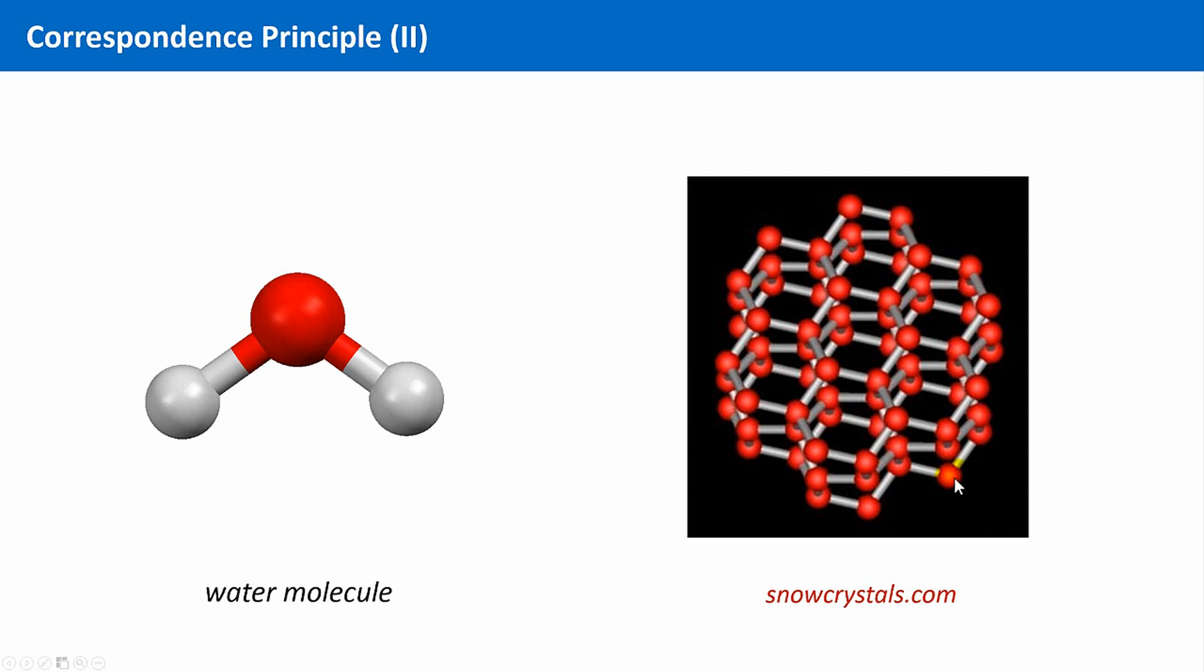The red spheres are oxygen atoms, and the hydrogen atoms are not shown. They lie between the oxygens along these gray rods. And what you recognize is that these water molecules are arranged in a particular ordered way, giving rise to this overall hexagonal shape.